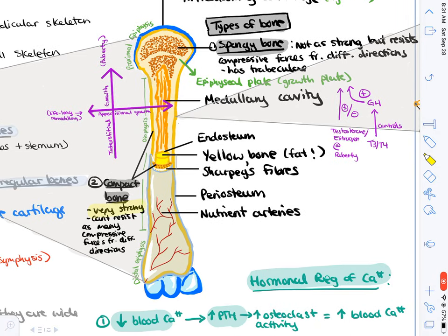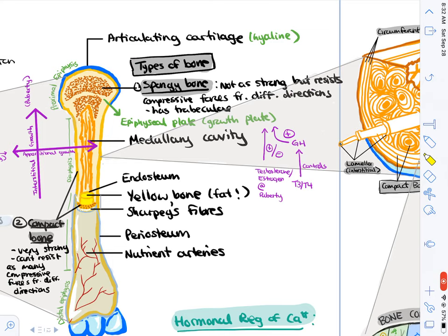Compact bone is very strong. It can't resist forces in many different directions, but a force in one or two directions it's very good at resisting because of its strength. On the other hand, spongy bone is not as strong, but it resists compressive forces from many different directions because of the trabeculae that it has. Having both types of bone allows our long bone to resist forces in many different directions and also strong forces, so it becomes a very strong structure.